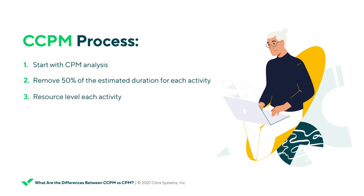The next step is to resource level each activity based on the space, staff, and equipment available. The goal with CCPM is to devote full resources to each activity, meaning it should stay on track to meet each individual deadline. Based on those resource constraints, you will then create a path from beginning to end of the project, known as the critical chain. The deadline will remain the unresource-leveled deadline, allowing for flexibility to adjust throughout the project process.